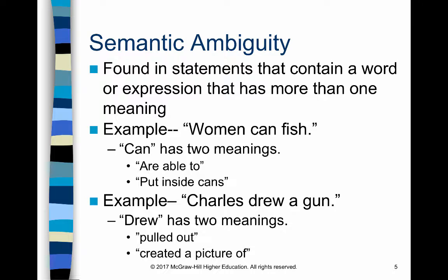Semantics has to do with the meanings of individual words. In semantic ambiguity, it's the meaning of individual words that causes confusion. For example, 'Women can fish.' The word 'can' has two entirely different meanings: 'can' means 'am able to' — as in women are capable of fishing — but 'can' also means putting things inside cans, like at a cannery. So 'women can fish' could mean that women work at canneries putting fish in cans. Without context, this could mean either one.